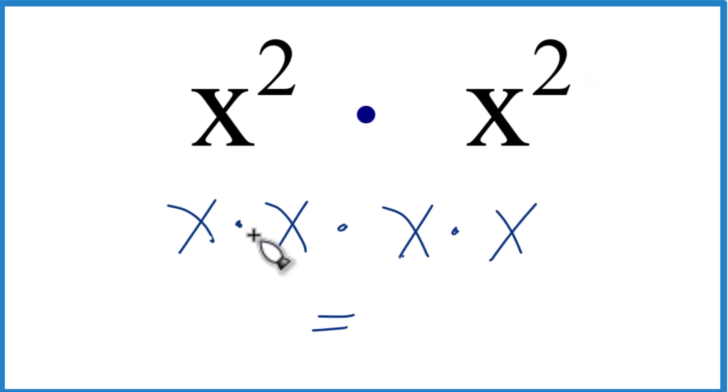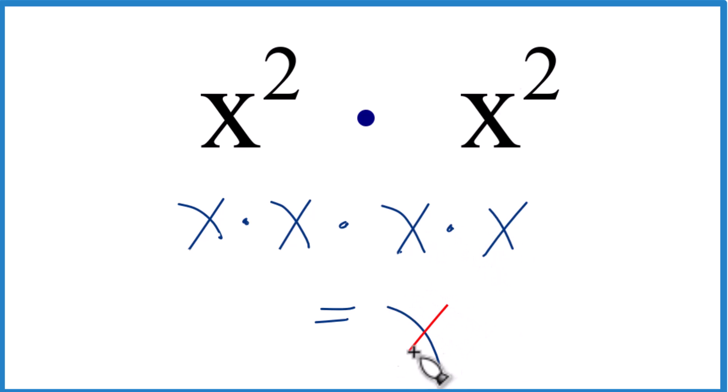and we can multiply that by x times x again, and if you add all of those up, you get 1, 2, 3, 4, x to the fourth.